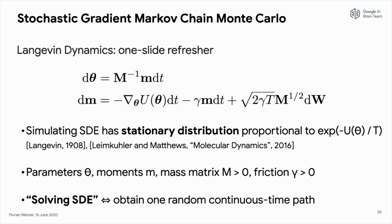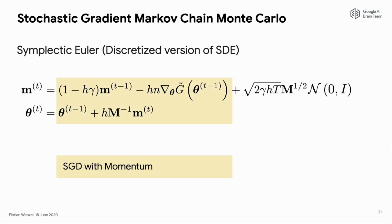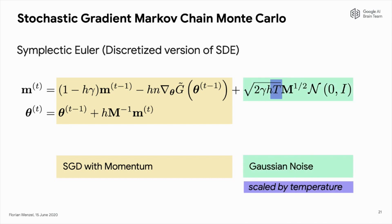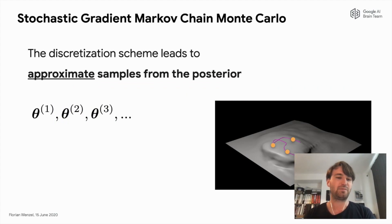Here's a brief refresher on Langevin dynamics, which are the core of SGMCMC. Langevin dynamics are governed by a stochastic differential equation of the parameter theta and the momentum vector m. Simulating this SDE leads to a stationary distribution proportional to the tempered posterior. To solve this SDE, we consider a discretization scheme — in this case, symplectic Euler — which resembles SGD with momentum, plus an additional term which is Gaussian noise scaled by the temperature. Executing this scheme gives us approximate samples from the posterior.